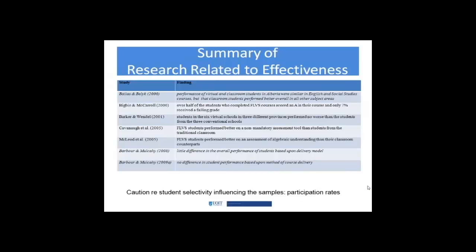Focusing on the research related to effectiveness of online learning — from Michael Barber's 2011 article — there is a table showing the sense of each study and its finding, framed in the context of the United States and their virtual schools. Although the first one is an Alberta reference, he does a dance between what we call online schools versus virtual schools versus blended schools in Canada. The acronym FLVS refers to Florida Virtual School, one of the first ones out of the gate in 1997. Barber, along with Rice and Kavanaugh, caution about this type of effectiveness research.